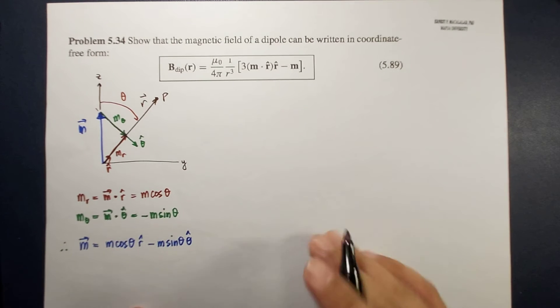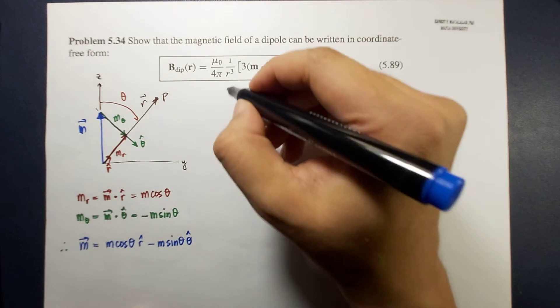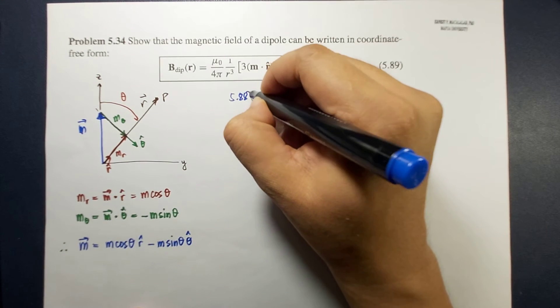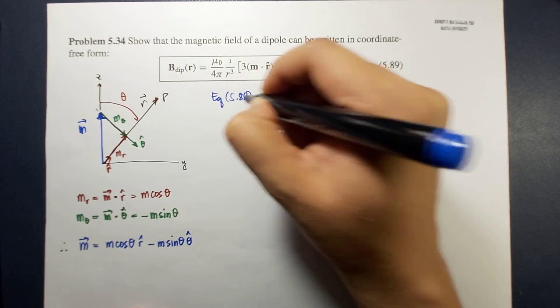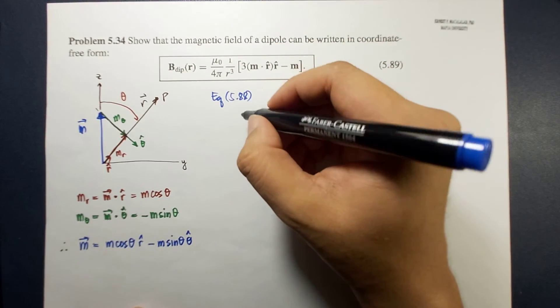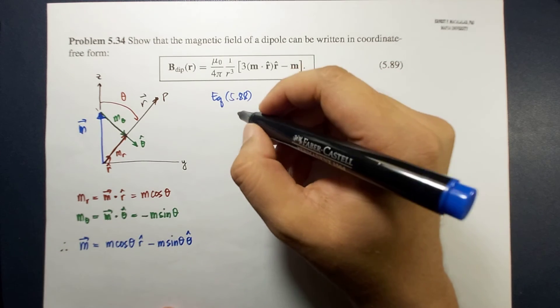Now, going back to our equation that relates that we got from equation 5.88. Remember, 5.88. The magnetic dipole moment, the magnetic field of the dipole